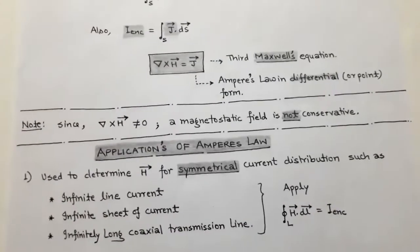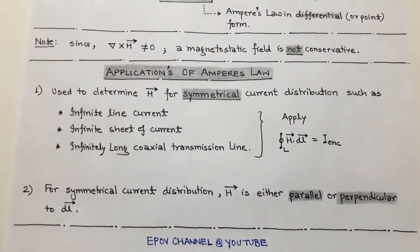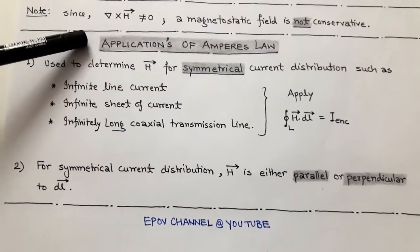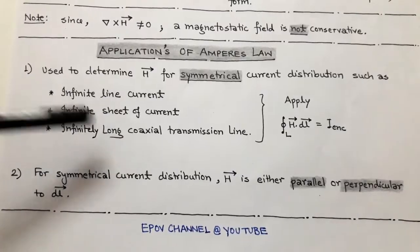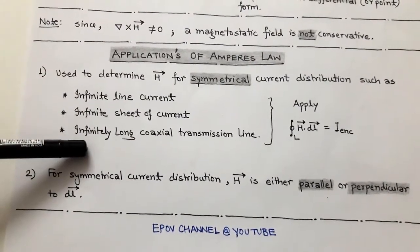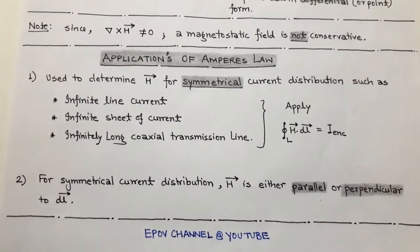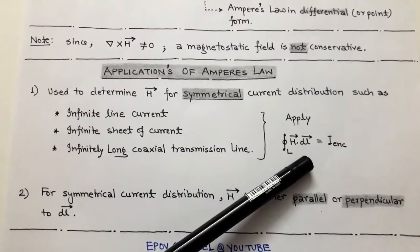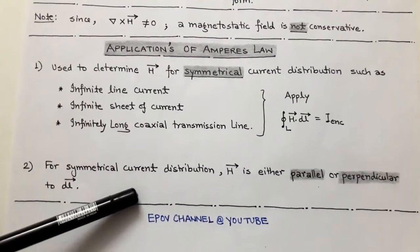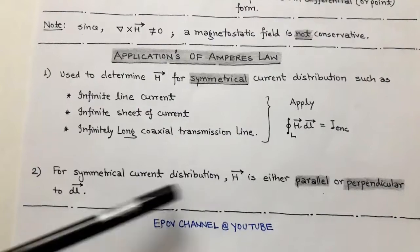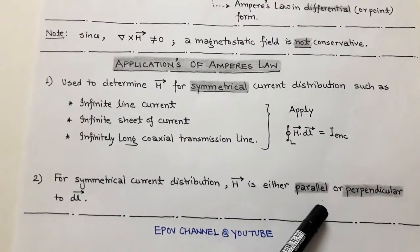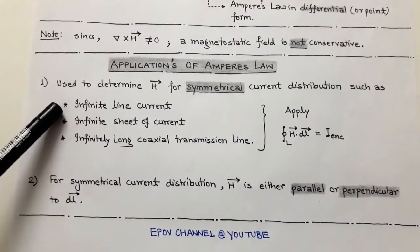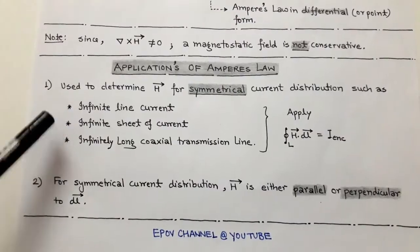Applications of Ampere's law: Ampere's law is used where there is a symmetrical current distribution, and it is analogous to Gauss's law. Ampere's law is used to determine the magnetic intensity H for cases such as infinite line current, infinite sheet of current, and an infinitely long coaxial transmission line. In these three cases, we apply Ampere's law — closed line integration of H dot dL equals I enclosed. As the current distribution is symmetrical, the magnetic intensity H is either parallel or perpendicular to dL vector.